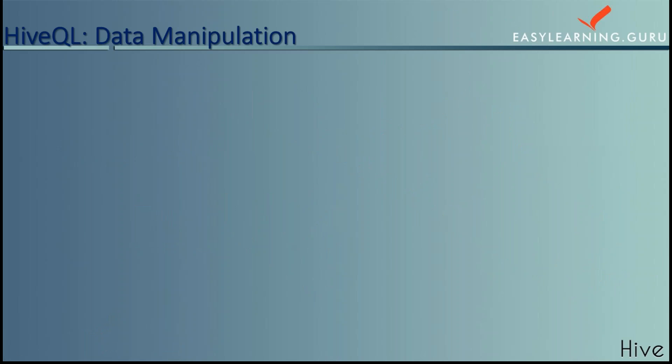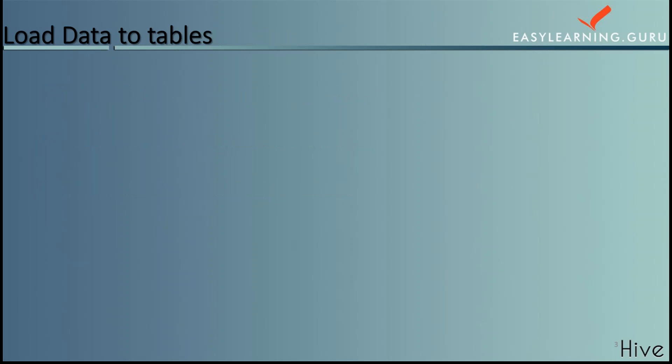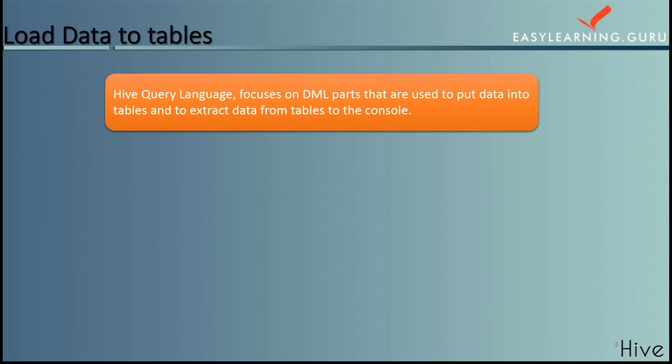We have Hive query language doing the data manipulation. So basically if I consider the Hive query language doing some data manipulation, we can insert some new information in the database and secondly we can retrieve the information from the database. So first here we will look how we can put the data — basically load the data into a particular table in Hive. Hive query language basically focuses on the DML parts that are used to put the data into the table and extract the data from that table and put the data onto the console or our table.